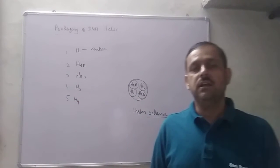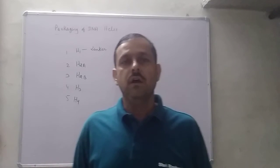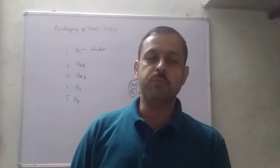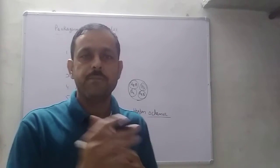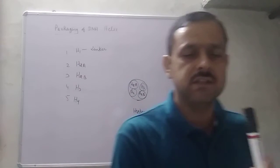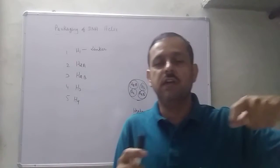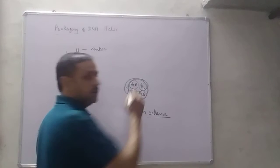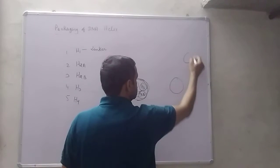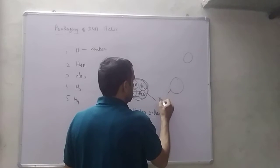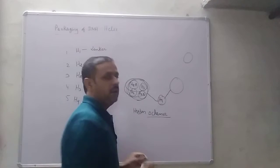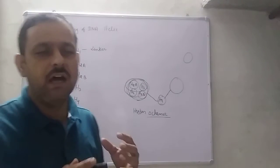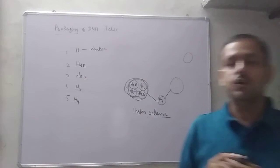अब DNA - आप लोगों को पता है कि DNA एक negative charge particle है। और histone protein positively charged है। तो इस positively charged particle के ऊपर DNA circular type से wrapped हो जाएगा। The negative charge DNA is wrapped around the positively charged histone octamer - यह एक octamer हुआ।